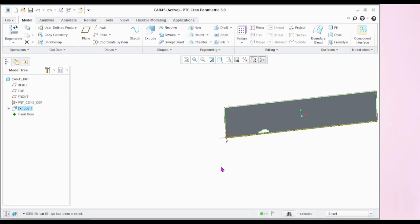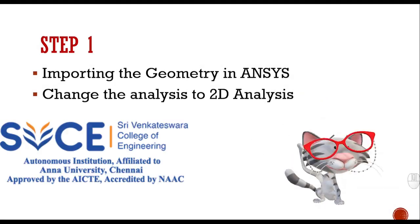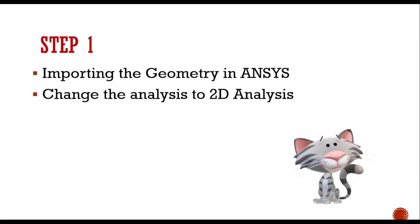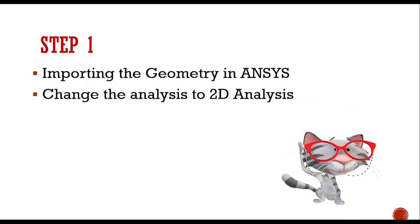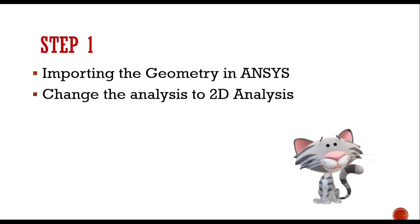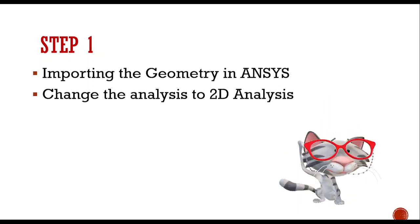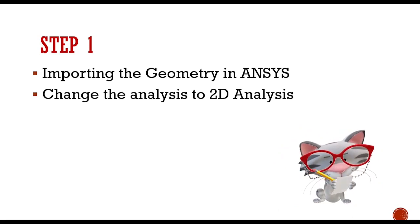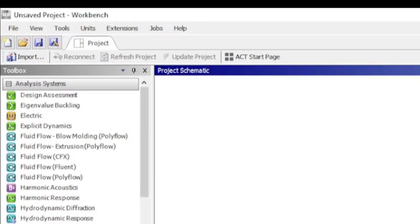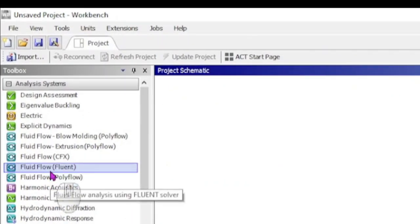Once the model is created in any 3D software, the next step is to proceed with analysis. In the analysis, first we have to import the geometry in ANSYS and change the analysis setting to 2D. The model we created is in 3D, so it has to be converted to a 2D model to solve the problem in 2D. Let us open ANSYS Workbench and double-click Fluid Flow Fluent.